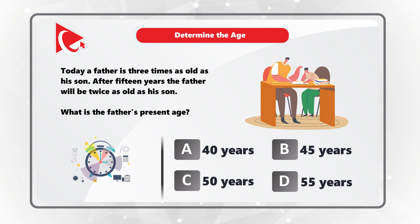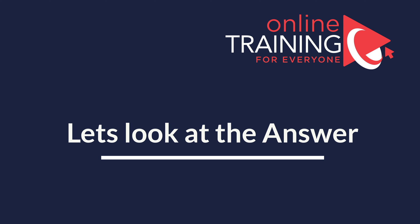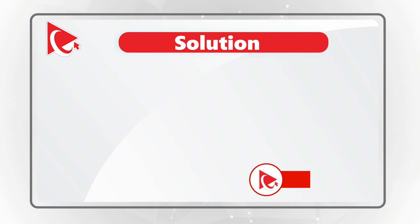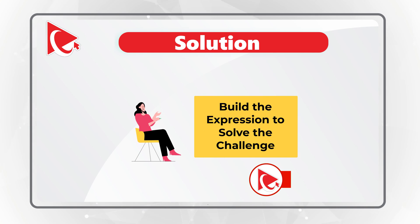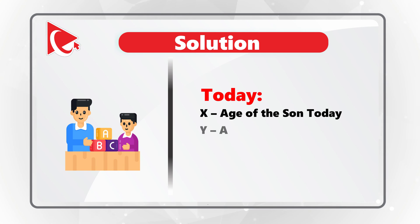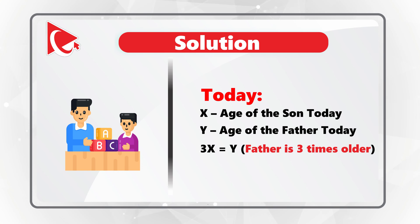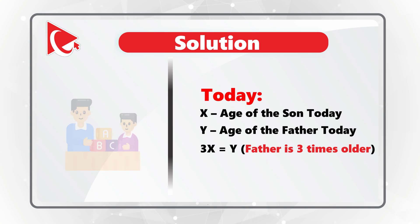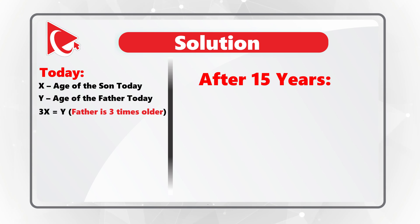One of the ways to solve this problem is to take the number from the solution and see if the math works. But instead, we are going to build the expression and calculate the father's present age. In the first step, we introduce two variables. Variable x will represent the age of the son today, and variable y will represent the father's age today. So our first formula is 3x equals y, indicating that today the father is three times older than his son. After 15 years, the new expression will be y equals 2x plus 15. Because in both cases y is the same, we can build the expression 3x equals 2x plus 15.